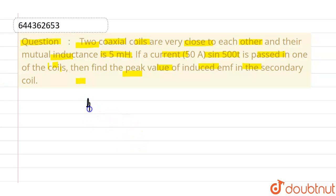So first thing, what we are given, we are given that current is nothing but 50 sin 500t. This is the current.